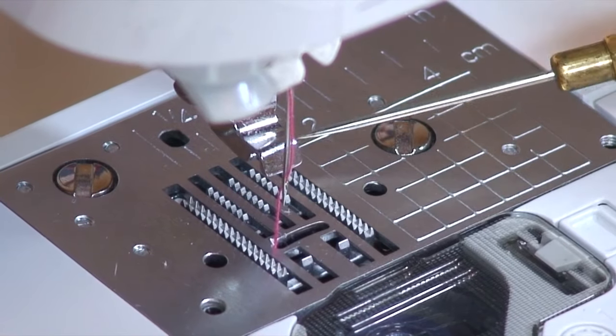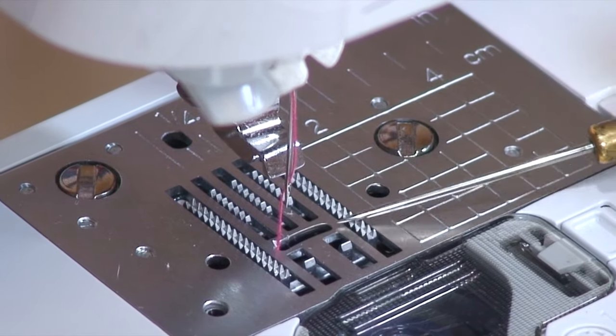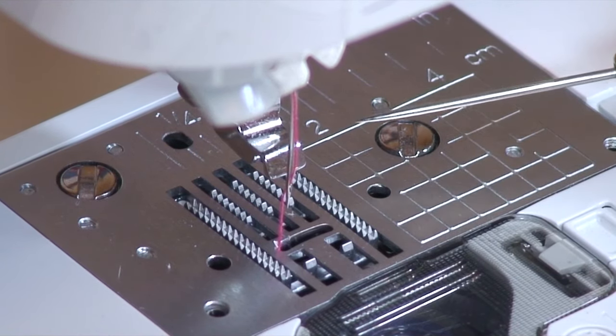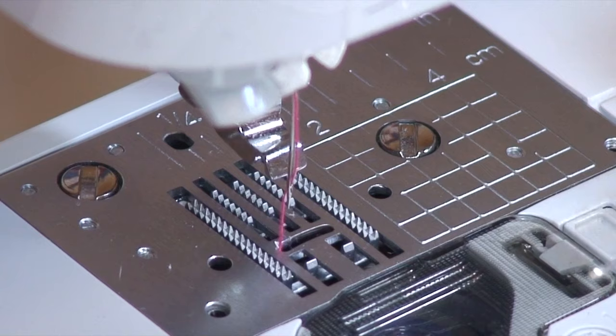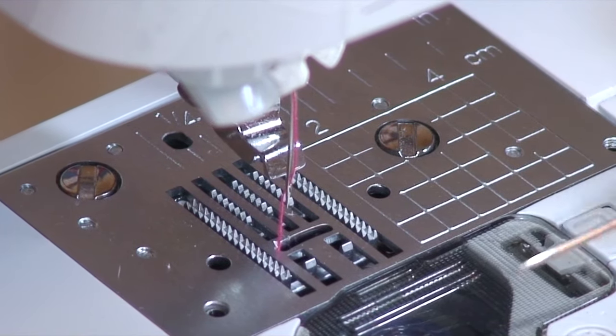So the feed teeth are these little guys right here, the little metal serrated ridged kind of things. And we call them feed dogs, feed teeth. I don't know why they're called feed dogs, but what they do is they feed the fabric through the machine. So that's what's controlling your fabric.